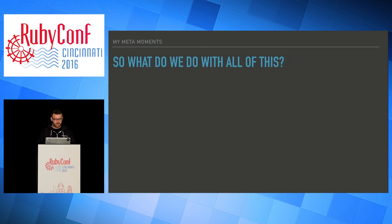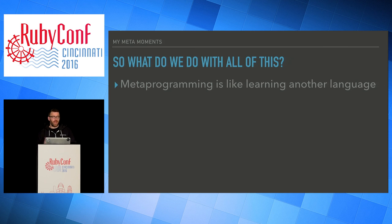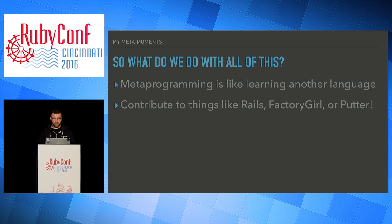So, what do we do with all this stuff? Metaprogramming, in a way, is like learning another programming language. If you're like me, you'll go learn Elixir, or Node, or Haskell, or whatever, and then you sit there thinking 'I really want to make something, but what?' So I made this. There's a lot of power and cool stuff you can do with metaprogramming — you can contribute to things like Rails or Factory Girl, or you can contribute to Putter. It's my first open source project, so I will be very nice because I don't really know what I'm doing. PRs are welcome. So I made this — what will you make?